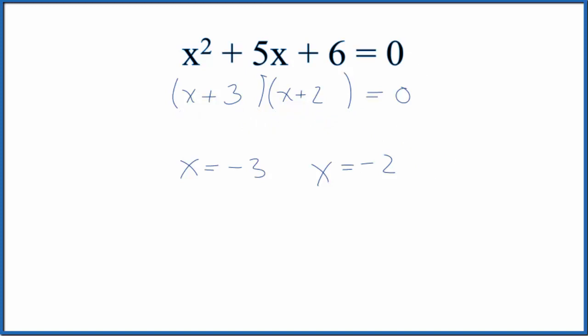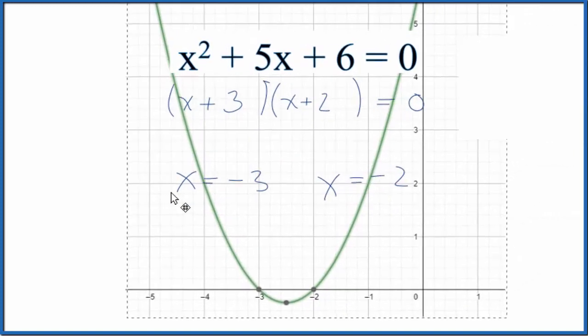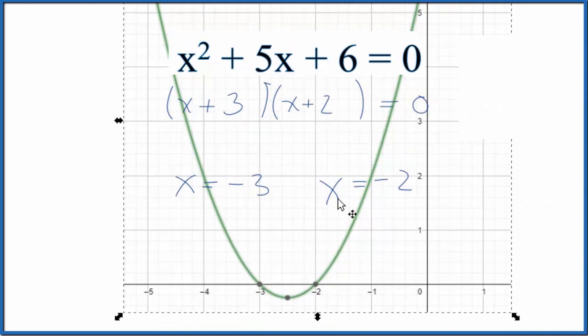And all of this makes sense because if we go back to our graph here, we have our minus 3 and our minus 2, just like we found when we factored the equation.